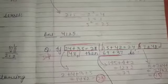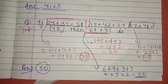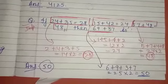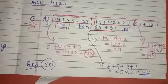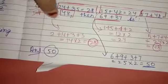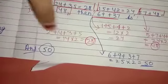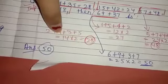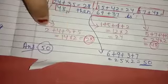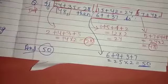Next question: if 24+35=28, 15+42=24, 57+48=48, then 169+37=what? For 24+35: add all digits — 2+4+3+5 = 14, then multiply by 2 = 28. That checks out.